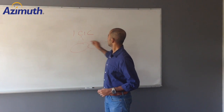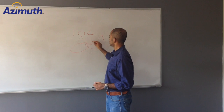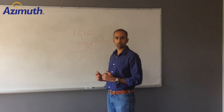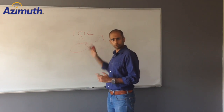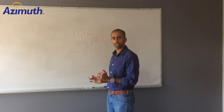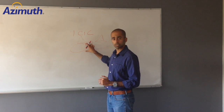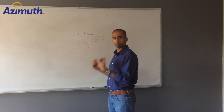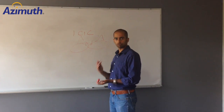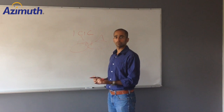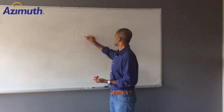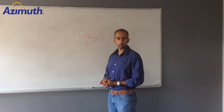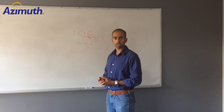The two cells talk to each other to figure out the best way to allocate resources to users, especially those at the cell edges, to make sure the interference the device sees from the other cell is minimized. This is done by both cells taking measurements of the interference they see — or the interference the devices see from the other cell — and exchanging this information over X2 to figure out the best resource allocation.